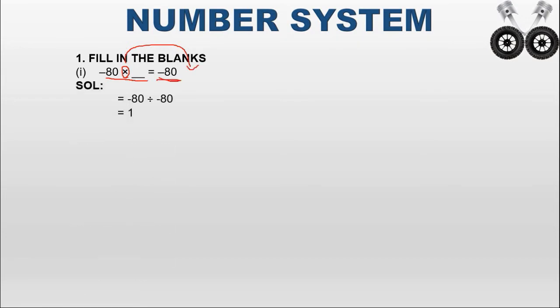In the RHS we have minus 80. Since the multiplication operator moves to the RHS, it becomes division. Instead of multiplication, we use division. The number in the LHS is minus 80, and we write it with the same sign — we do not change the sign. So minus 80 divided by minus 80: both cancel, giving the answer 1. Therefore, minus 80 into 1 equals minus 80.